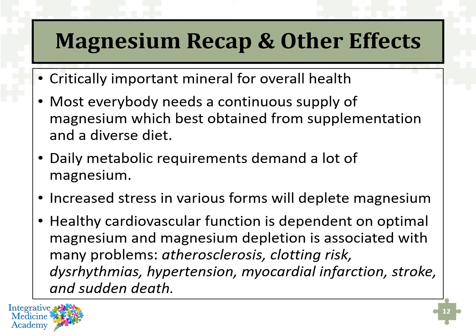As a quick recap — and we get into this in much greater detail within the Mitochondria Mastery course — magnesium is critically important for overall health. Most everybody needs a continuous supply of magnesium, best obtained from supplementation as well as a diverse diet. Daily metabolic requirements, because we produce so much ATP, require a lot of magnesium. Increased stress in various forms can actually deplete magnesium. Healthy cardiovascular function — whether related to atherosclerosis, hypertension, risk factors for myocardial infarction, stroke, or clotting risk — is worsened when magnesium is deficient.